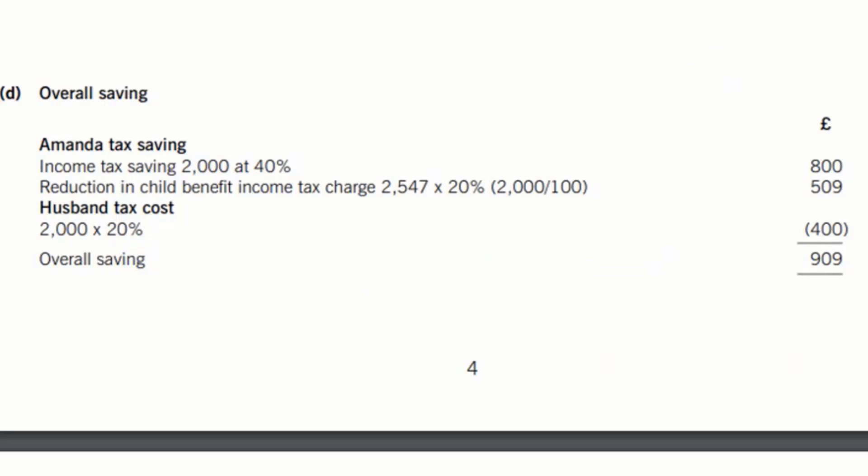So you could either recalculate the charge or simply work out the reduced charge based on the amount of child benefit. So that was £2547 at 20% giving you £509.